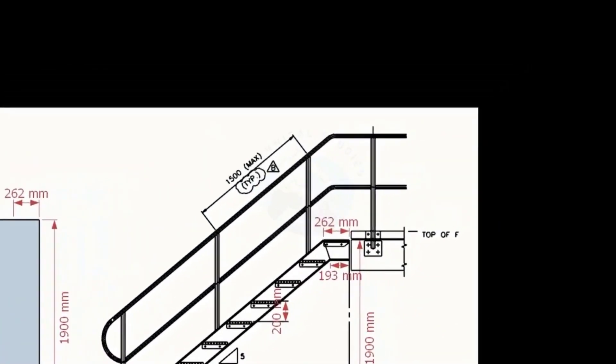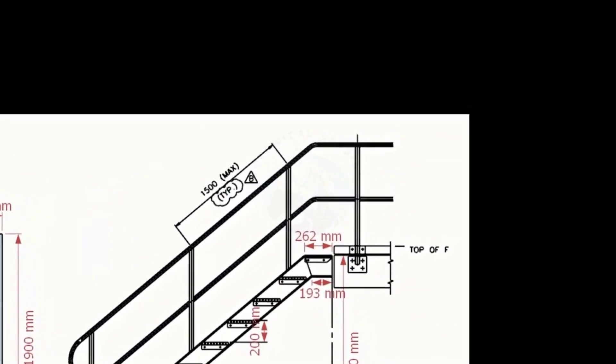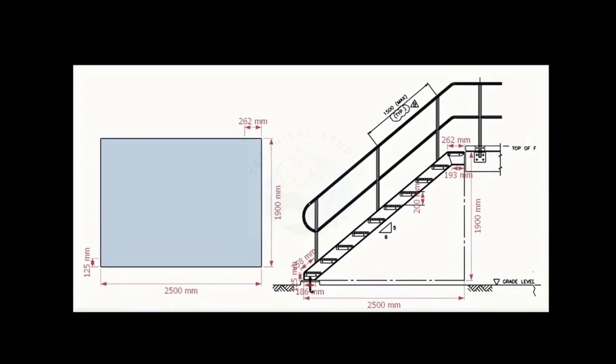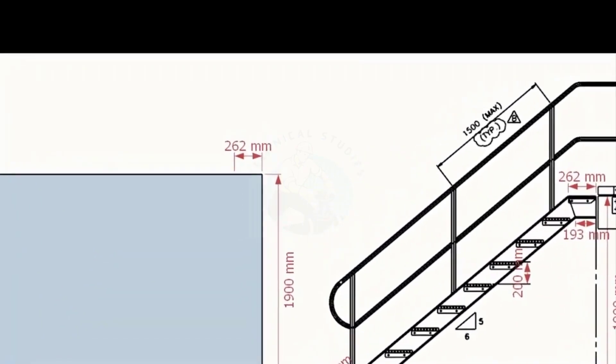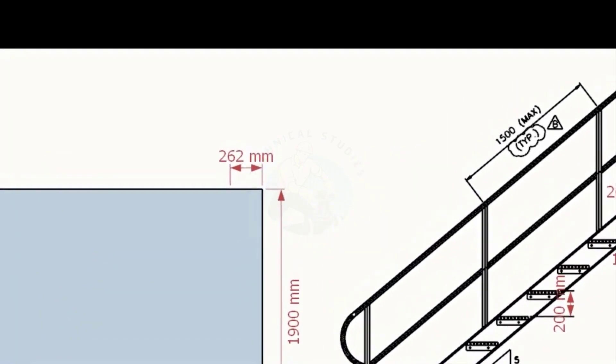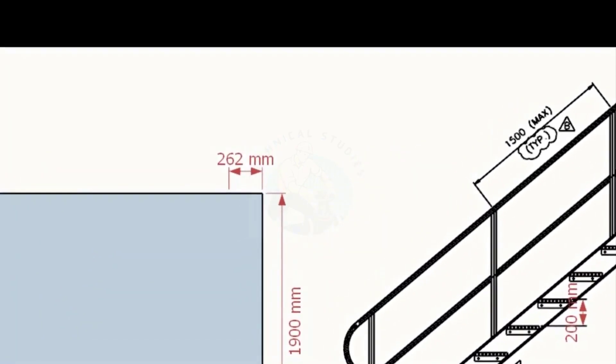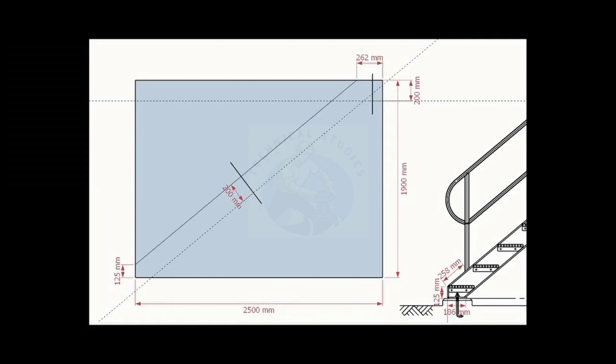Look at the top end of the stair. Mark 262 millimeters on the top of the layout. Draw a line connecting these marks. Draw a parallel line 200 millimeters wide to this line.